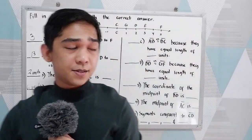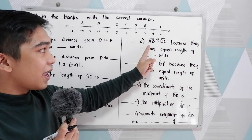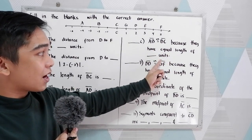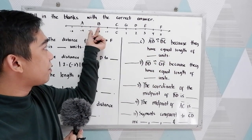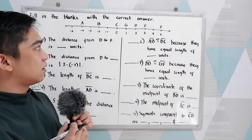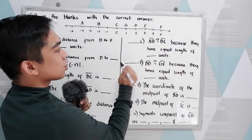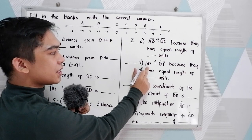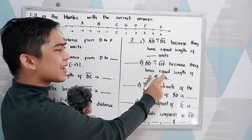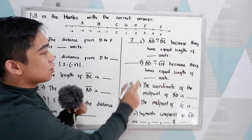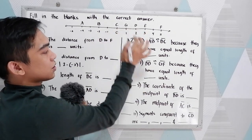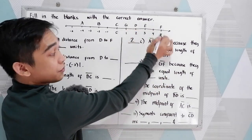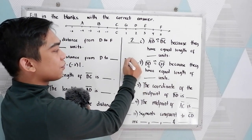Number 6: Segment AB is congruent to segment BC because they have equal length of blank units. From A to B: 1, 2. From B to C: 1, 2. So we have 2 units. Number 7: Segment BD is congruent to segment GF because they have equal length of blank units. From B to D: 1, 2, 3, 4 — 4 units. From G to F: 1, 2, 3, 4 — also 4 units. So they are equal, 4 units.